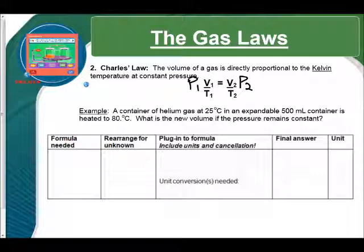Okay, the next gas law is Charles's law. The volume of a gas is directly proportional to the Kelvin temperature at constant pressure. So, if we started with our combined gas law, we could actually get rid of the pressures because they're constant. So, if we read our example, a container of helium gas at 25 degrees Celsius in an expandable 500 milliliter container is heated to 80 degrees Celsius. What is the new volume if the pressure remains constant? Okay, so we know 25 degrees Celsius. That's my T1. That's my first temperature, and 500 milliliter container is my V1, and we're going to heat that to 80 degrees Celsius. So, that's T2. That's my new temperature. They want to know what the new volume is going to be. So, V2 is what we're looking for if the pressure remains constant.